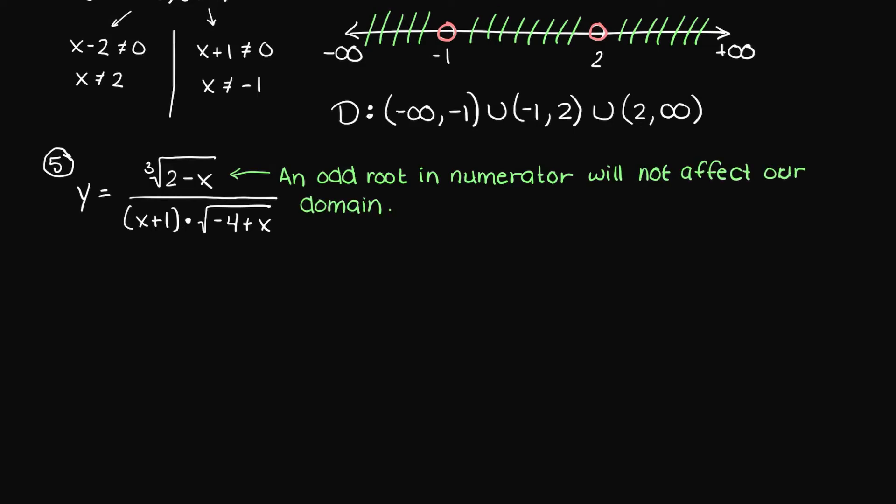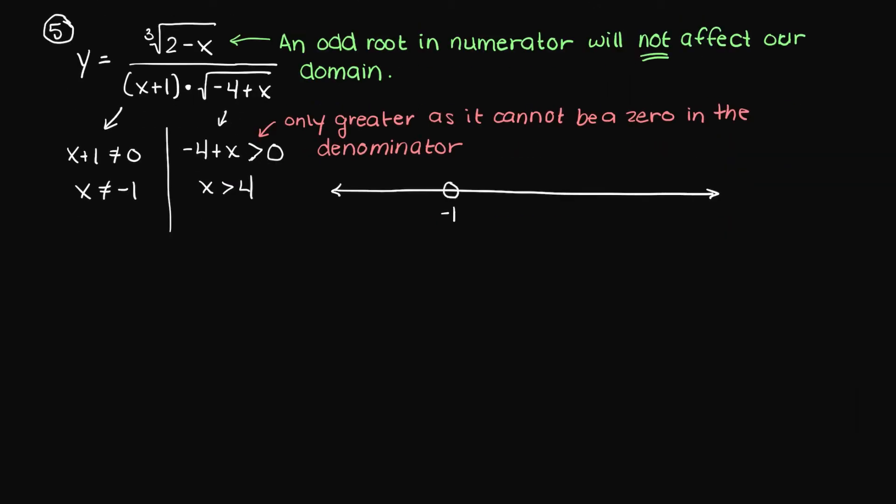However, on the bottom, we have x plus 1, which when solving the inequality means we have a hole at minus 1. And we also have to solve for the square root, which will affect our domain. So x must be greater than 4. As we can see on the number line here, the hole at minus 1 doesn't really matter, as x must be greater than 4 anyways. So writing the answer in interval notation, we have capital D, colon, all numbers greater than, but not including 4, to positive infinity.